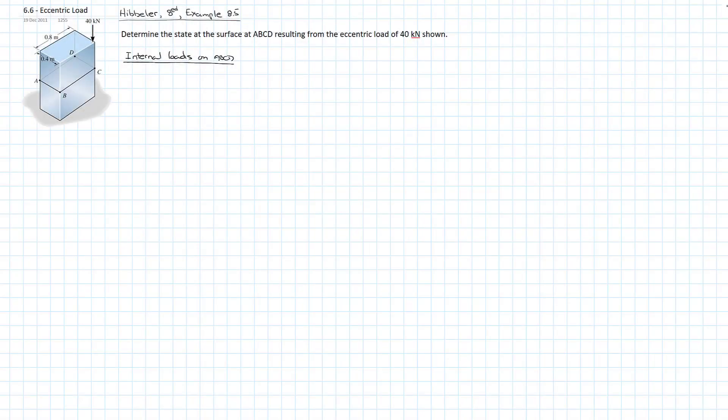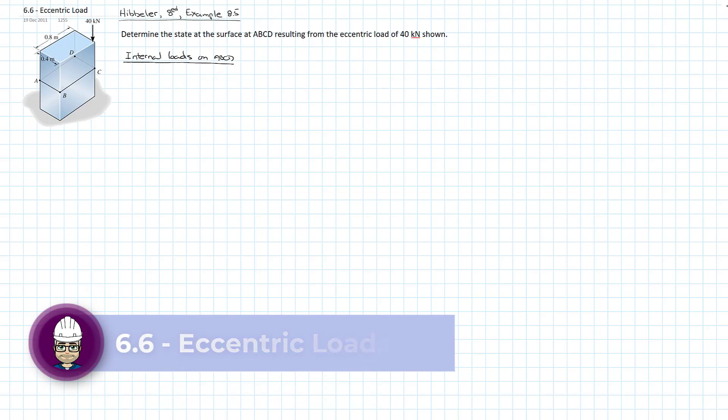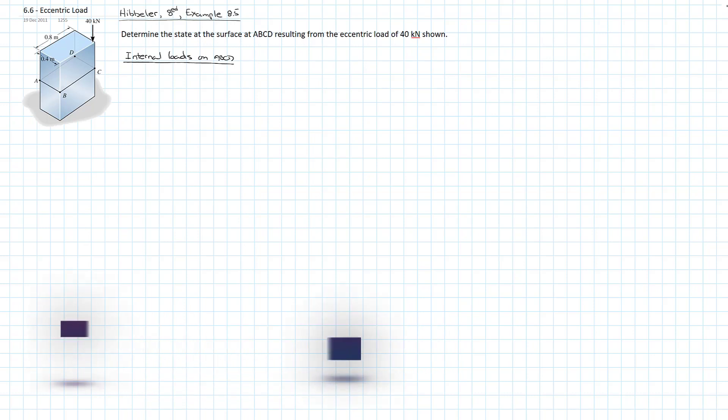Welcome back. We're getting ever more complicated in our compound loading, and in this case we want to look very specifically at the impact of eccentric loading on a structure or a column. This problem I want to point out because I have taken it directly from the textbook - it's based on example 8.5 in Hibbeler 8th edition, Mechanics and Materials. So credit where it's due, I think it does a great job of demonstrating the effects of eccentricity on loading, and so I'm going to recreate it in my own words here for you to benefit from.